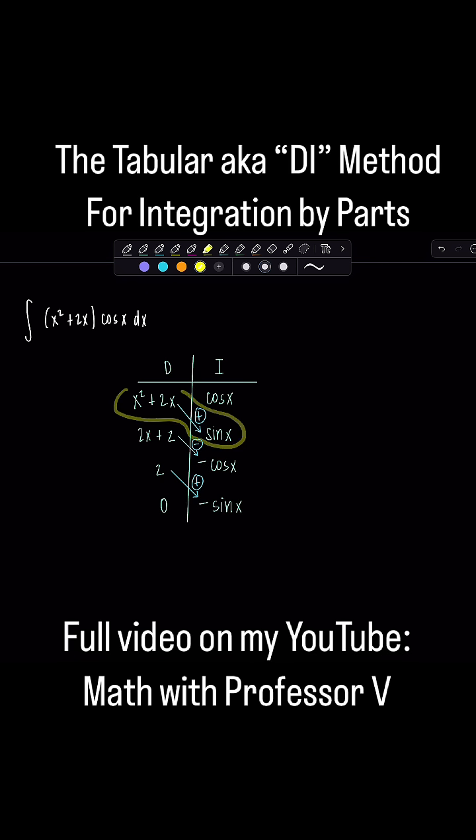so here we go. We've got x squared plus 2x times sine x. x squared plus 2x times sine x.